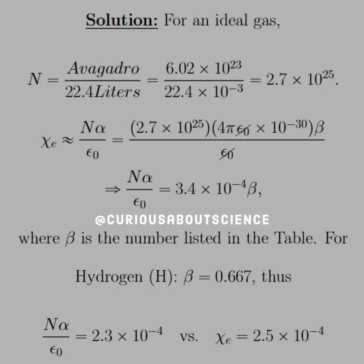Now we can approximate chi-e with N alpha divided by epsilon naught, which works well for alpha, the atomic polarizability given in the tables. Epsilon naughts cancel, and we're left with this term beta, which we can plug in.